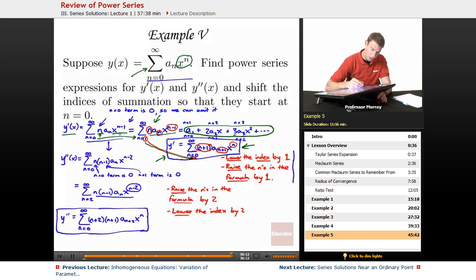For y double prime, I went ahead and took another derivative of x to the n minus 1 and I got n minus 1 x to the n minus 2. I noticed that since I have an n and an n minus 1, the n equals 0 and the n equals 1 term are both going to be 0. I dropped those out and so I can start my index at n equals 2. That was not shifting the index yet. That was just dropping off a couple 0 terms. And then I'm going to use this same principle where I lower the index by 2. That's why that 2 became a 0. And then I raise each of these n's by 2. That n became n plus 2.